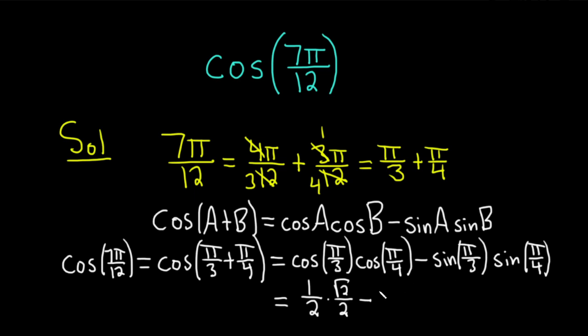And minus sine of π over 3 is the square root of 3 over 2. And sine of π over 4 is the square root of 2 over 2.